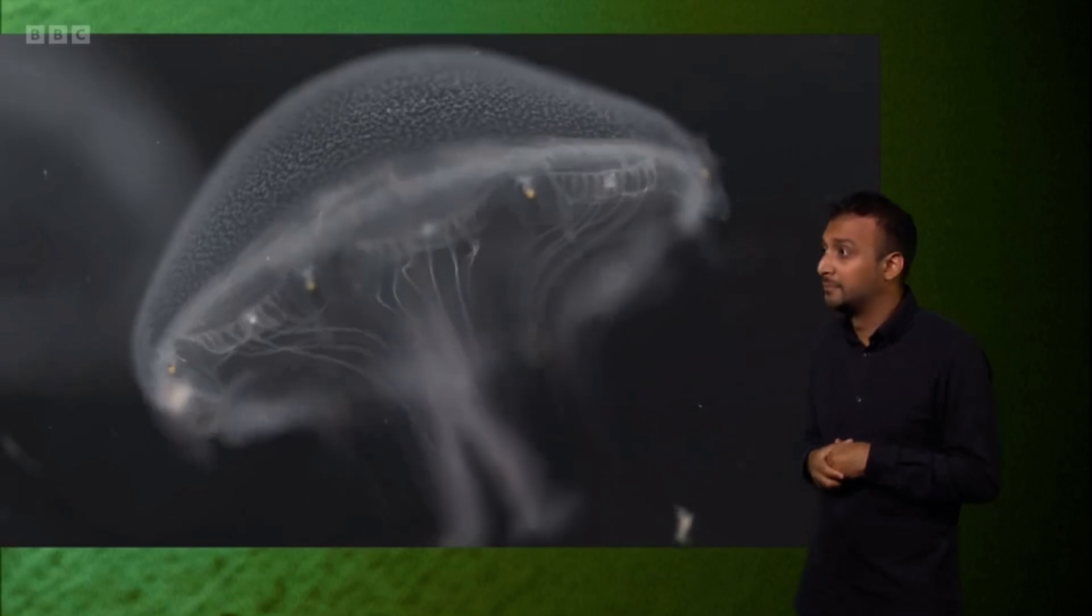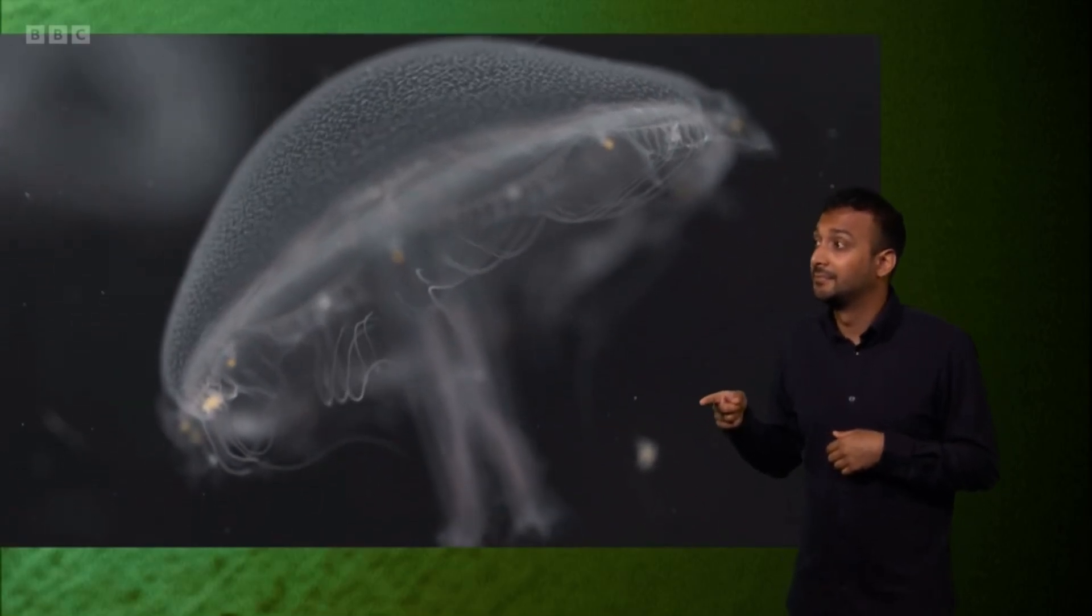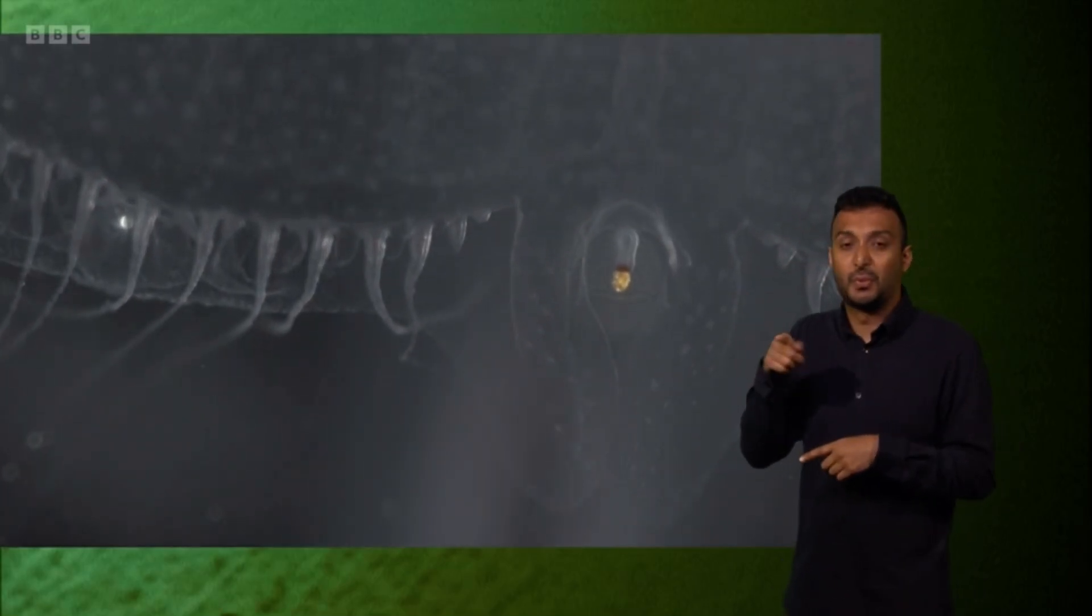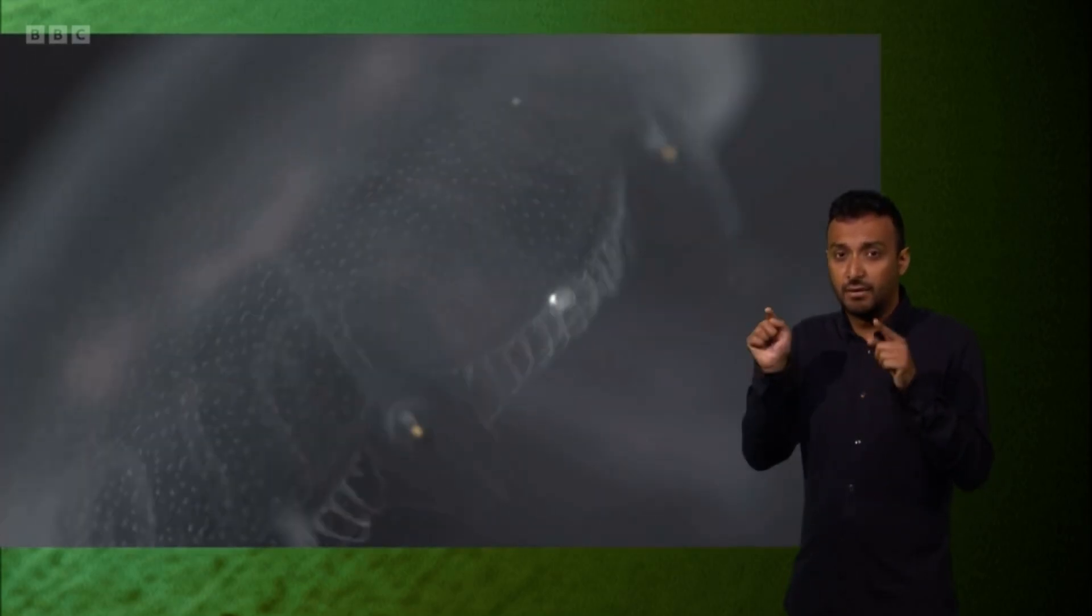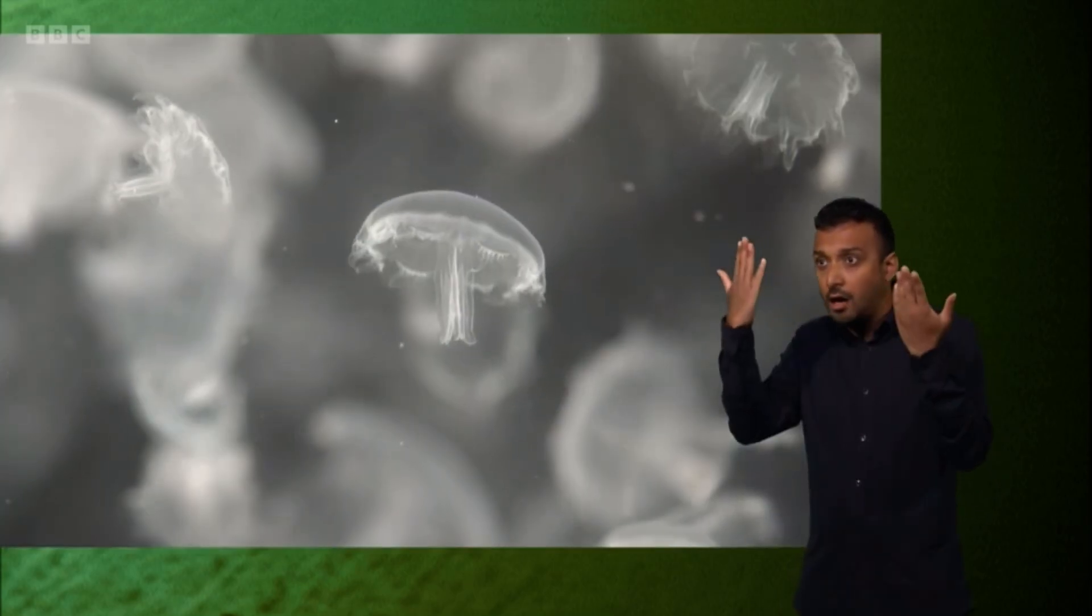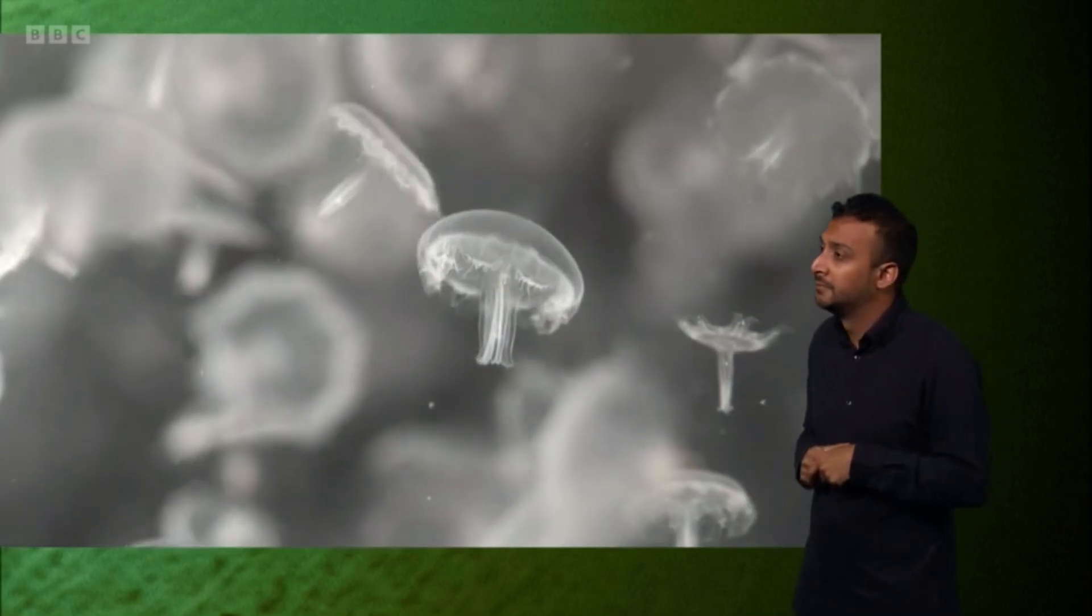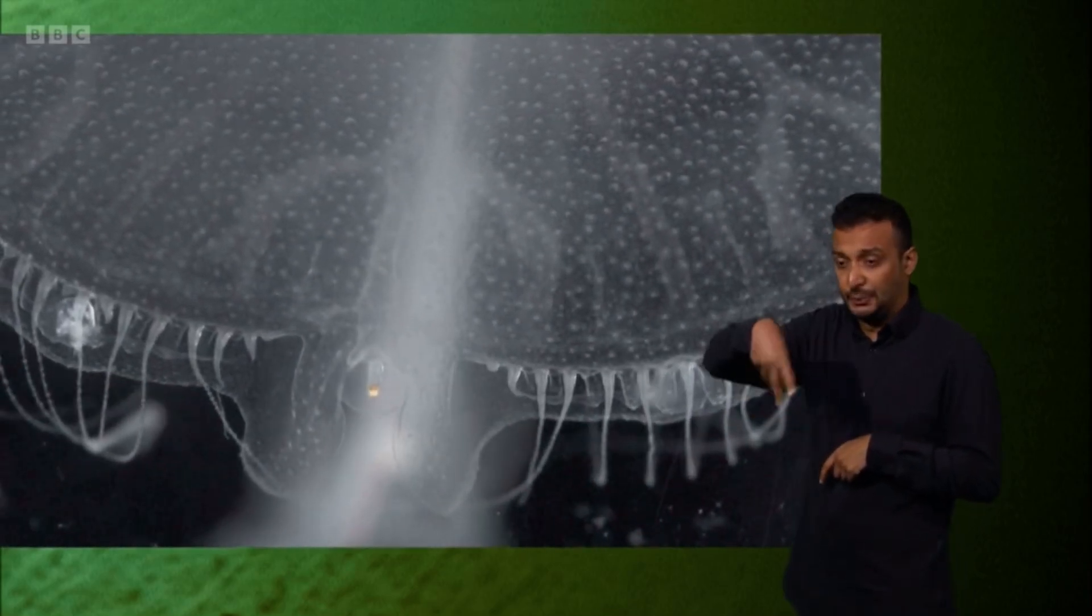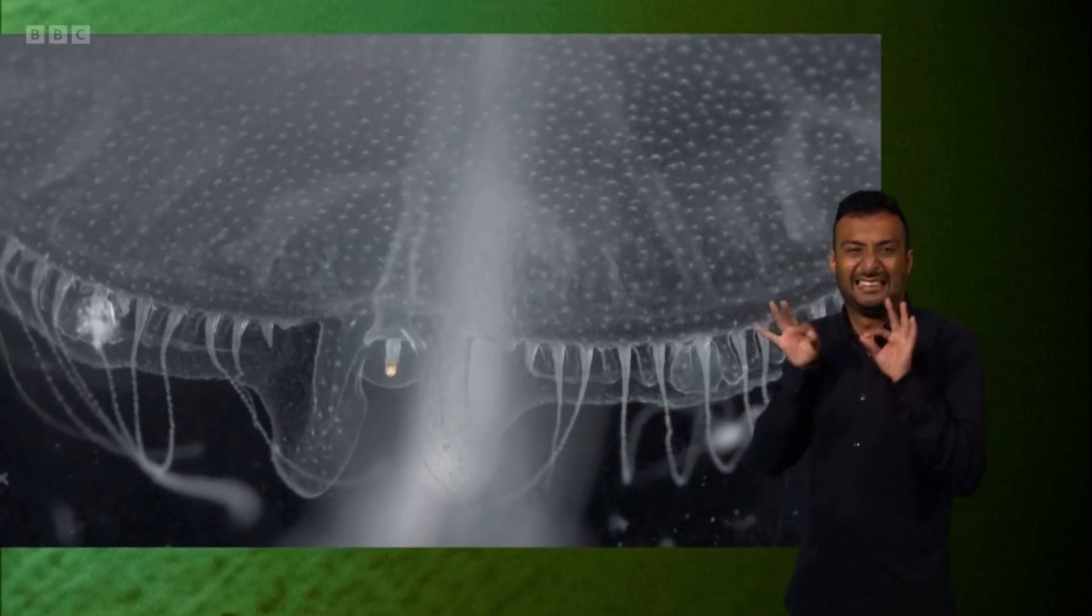They now have their distinctive bell shape. Eye spots that can detect light and dark. And tentacles, lined with stinging cells, perfect for paralysing their planktonic prey.